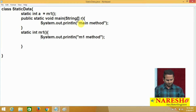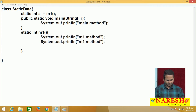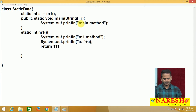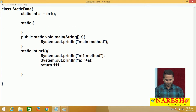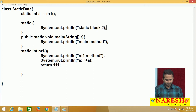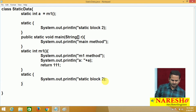Here, I am writing one more System.out.println — 'a plus a'. After that, I have a static block. I am writing System.out.println — 'static block 2'. Then I am copying that same static block and pasting it above, making it 'static block 1'. Please observe, everybody.